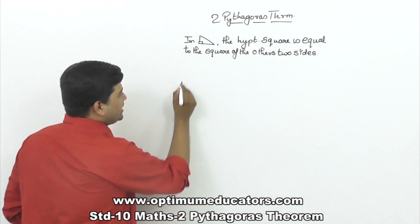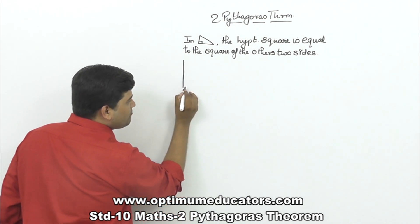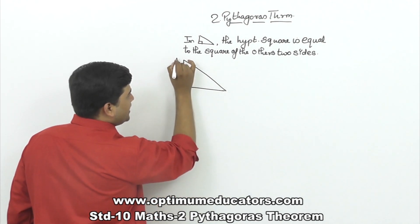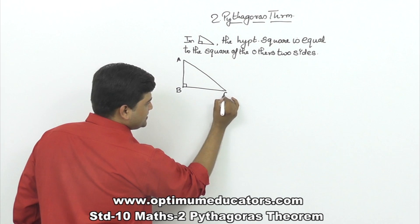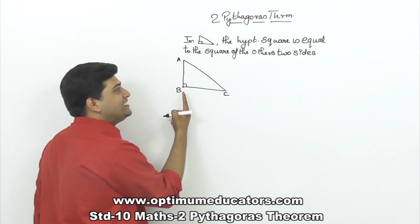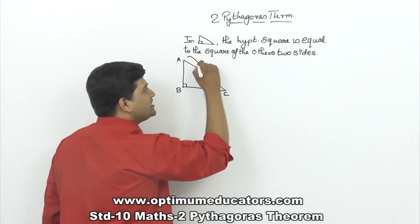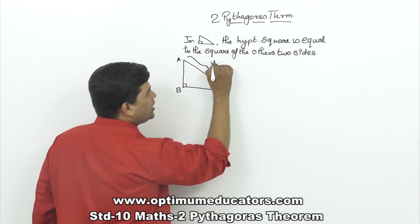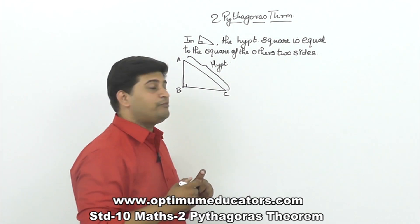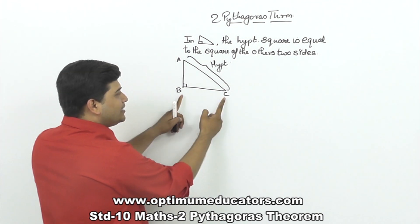Let us study in detail in terms of maths. Let us take right angle triangle ABC. In this right angle triangle, angle B is 90 degrees. The length AC is called as hypotenuse, and the other two sides are AB and BC.